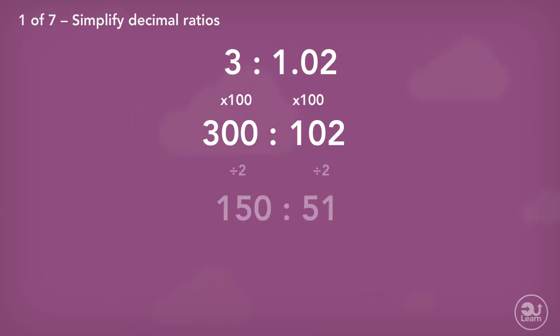Both values can be divided by 2 to give us 150 to 51. These values can further be divided by 3 to give us 50 to 17. We check again to see if both values can be divided by a whole number. They only have a common factor of 1, so 50 to 17 is the final simplified answer.